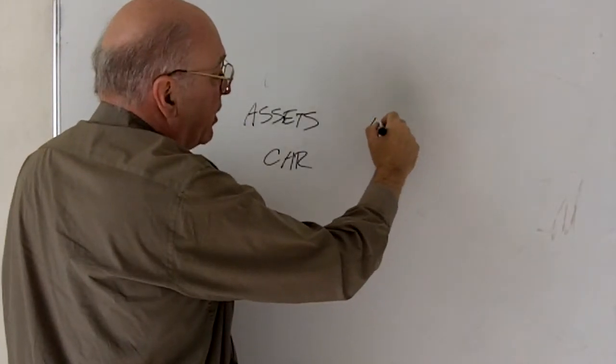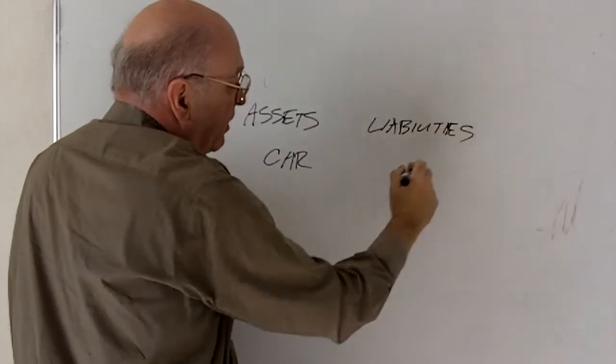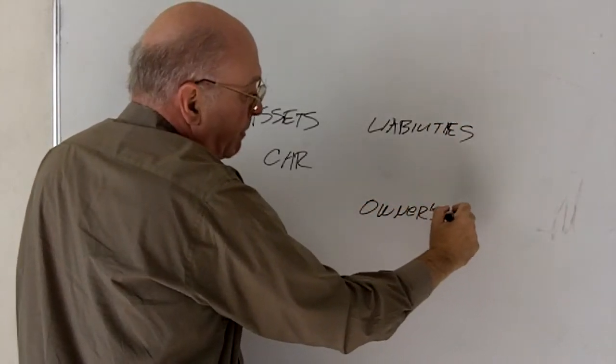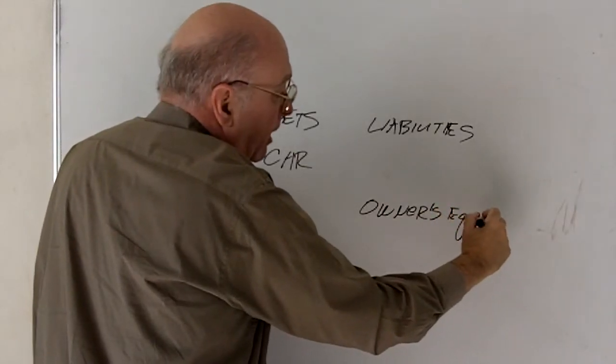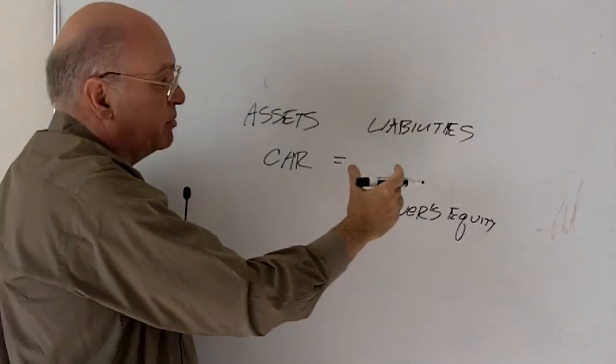On the other side, we see liabilities and owner's equity. The who side. Imagine on this side, we see things. On this side, we basically see people.